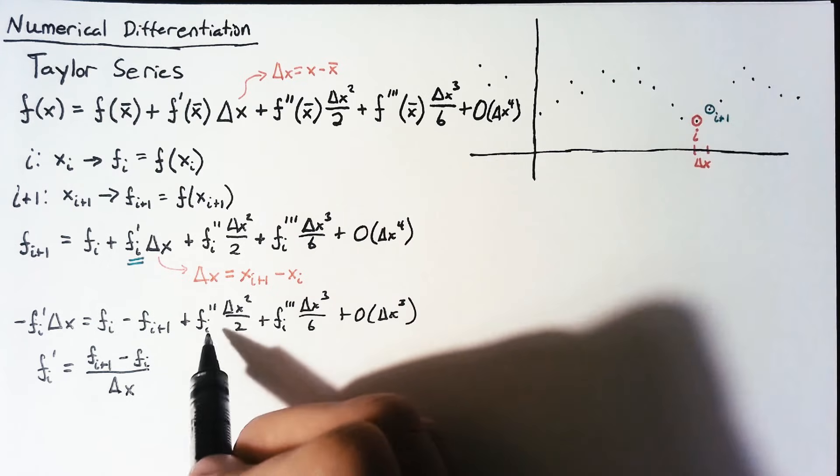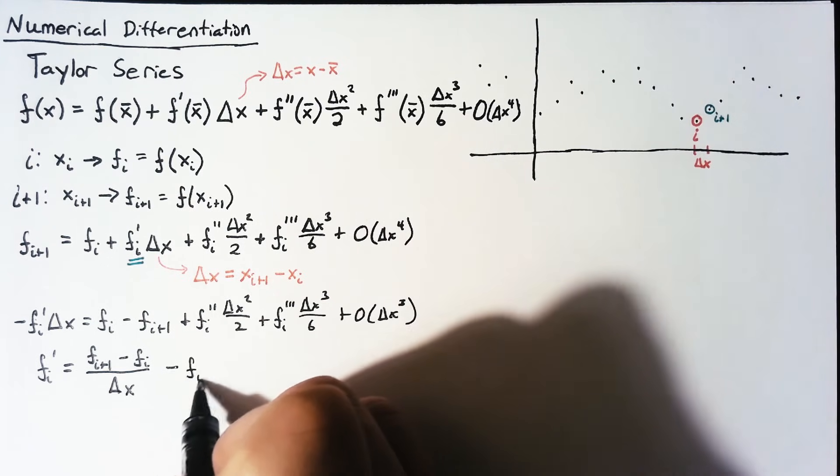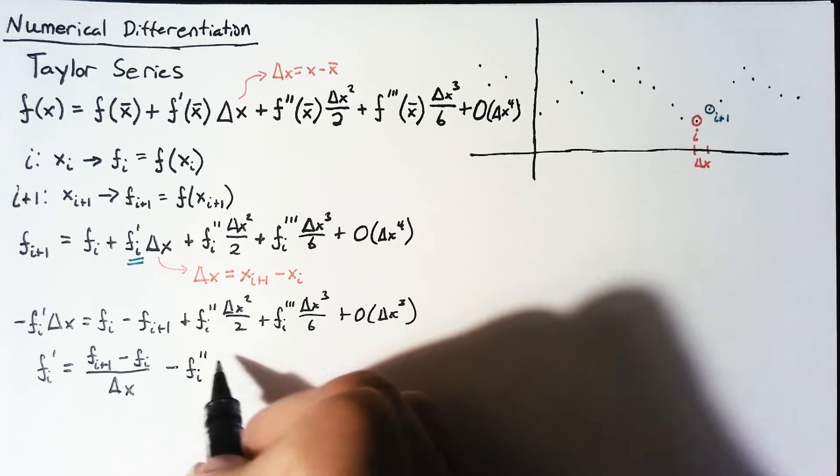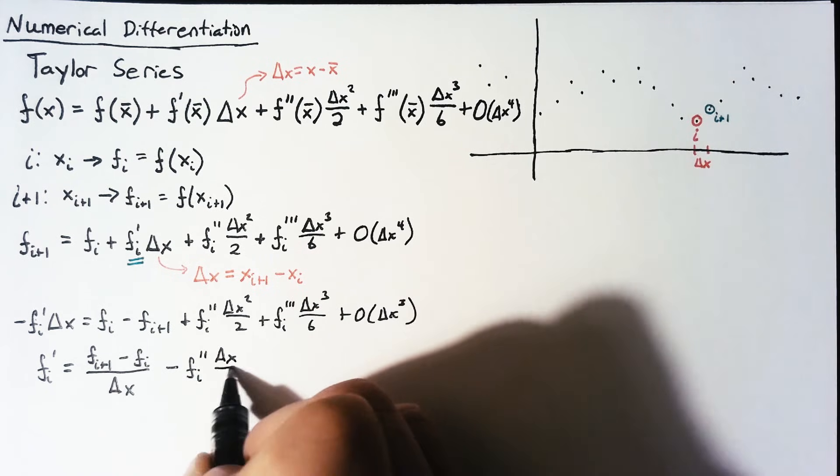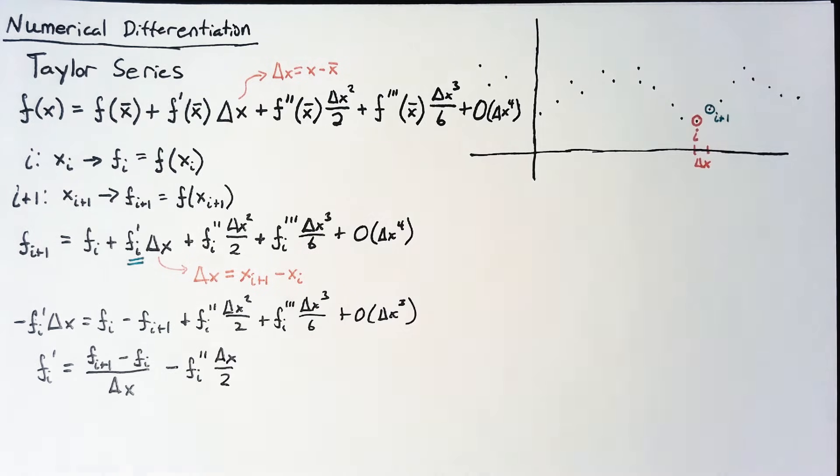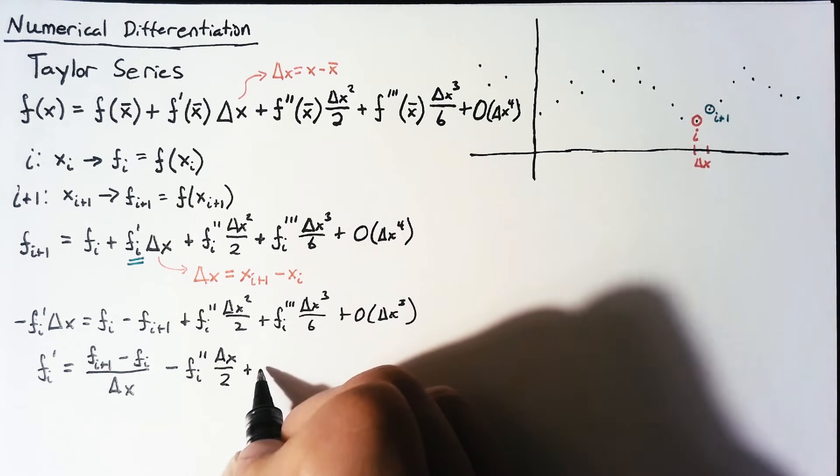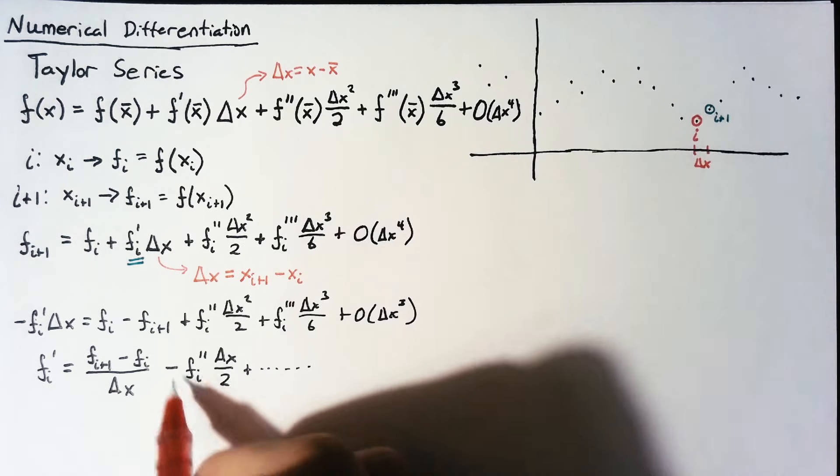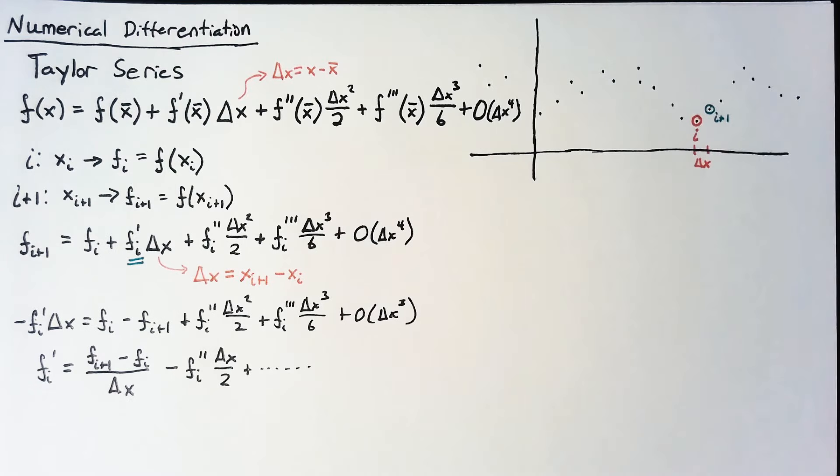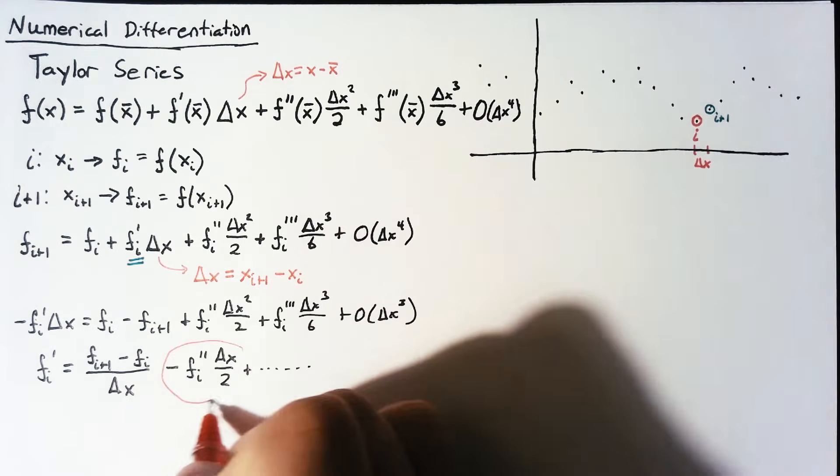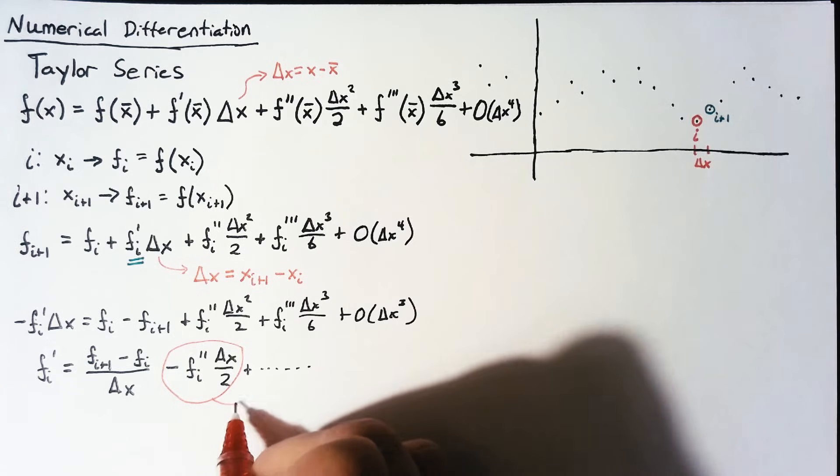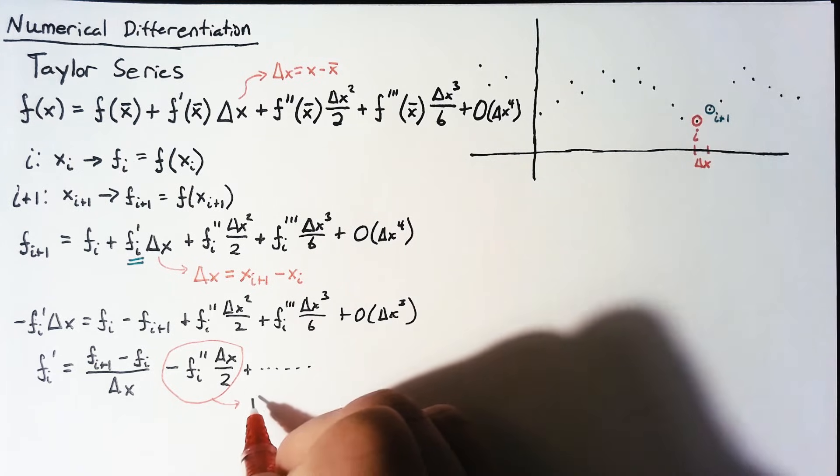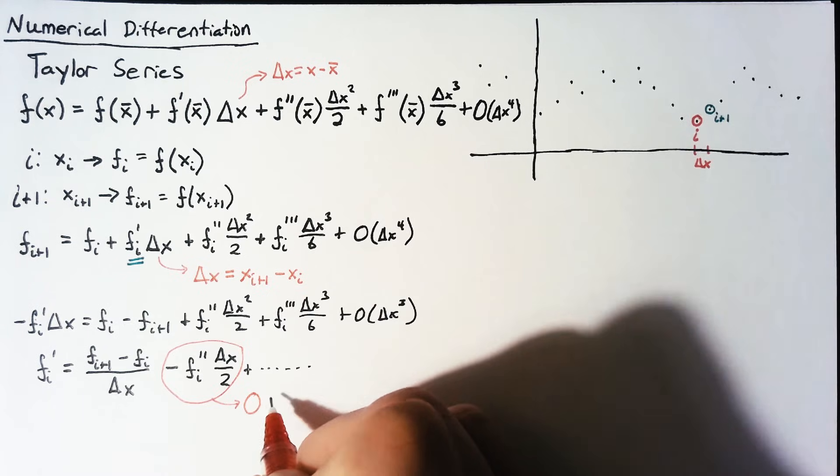And our next term here is this minus fi double prime multiplied by only 1 delta x divided by 2. And then we can keep on writing the rest, but really that's all that matters. So the important thing to note here is that we don't know what fi double prime is. So all of this we're just going to throw away and call it error. And so we end up with an error that has an order of delta x.